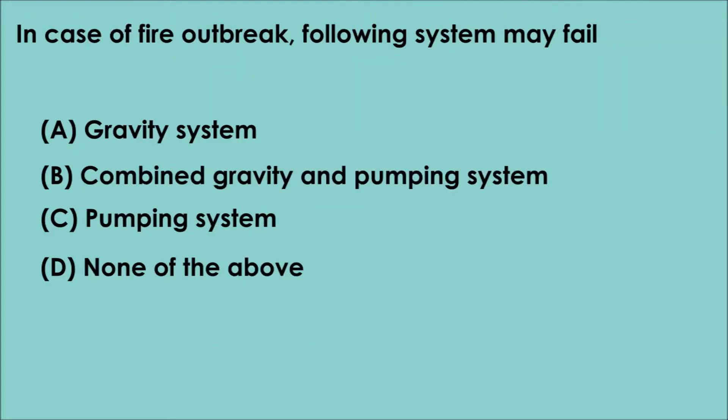Question 8. In case of fire outbreak, which following system may fail? A. Gravity system. B. Combined gravity and pumping system. C. Pumping system. D. None of the above. The correct answer is option C. In case of fire outbreak, pumping system may fail.